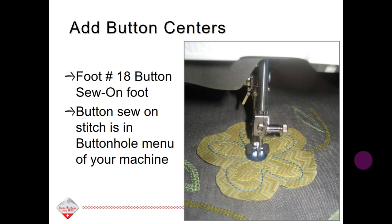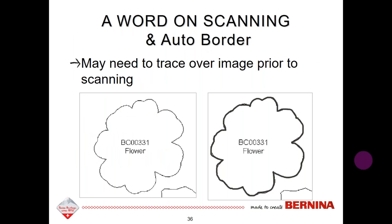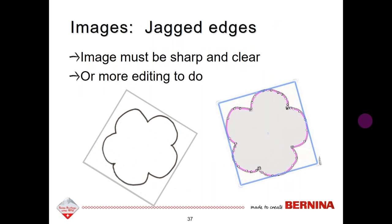Now I want to talk about scanning, especially when you're going to use auto border. If you scan in a pattern, sometimes the lines are really faint. You want to make sure you trace over those fine lines — you can see how jagged a line can be, and that creates a lot of nodes. If you trace over the pattern with a Sharpie or a Micron pen and darken the lines a little, you'll get a better scan. You don't want jagged edges, as those create a lot of different nodes that will have to be edited.